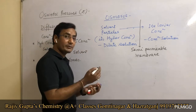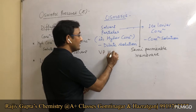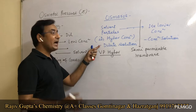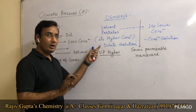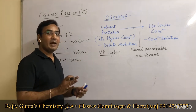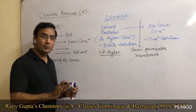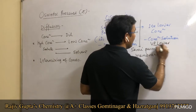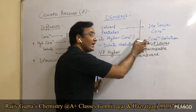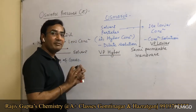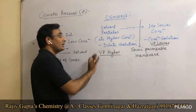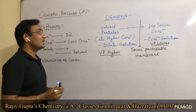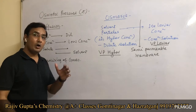The driving force for osmosis is vapor pressure. Solvent particles have higher vapor pressure in the dilute solution than in the concentrated solution. This pressure gradient facilitates movement of solvent particles from the dilute side to the concentrated side.